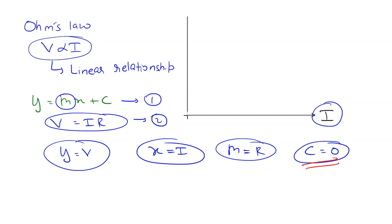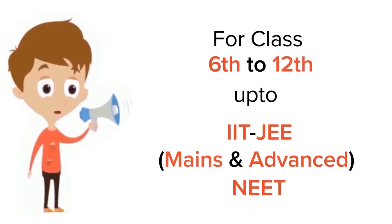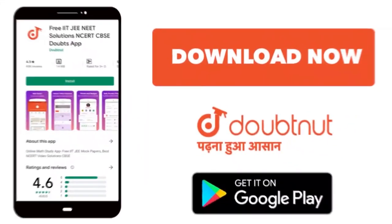So the graph will be like this. For class 6 to 12, JEE, and NEET level, trusted by more than 5 crore students. Download Doubtnut today.